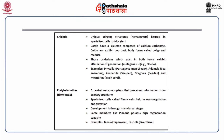Platyhelminthes, or flatworms, have a central nervous system that processes information from sensory structures. They have specialized cells called flame cells which help in osmoregulation and excretion. Development is through many larval stages. Some members like planaria possess high regeneration capacity. Examples include taenia and fasciola.